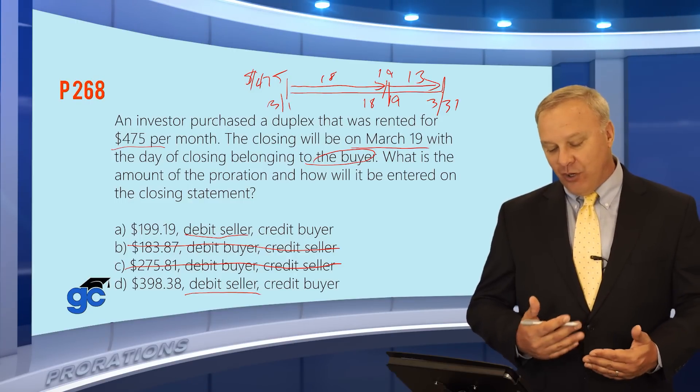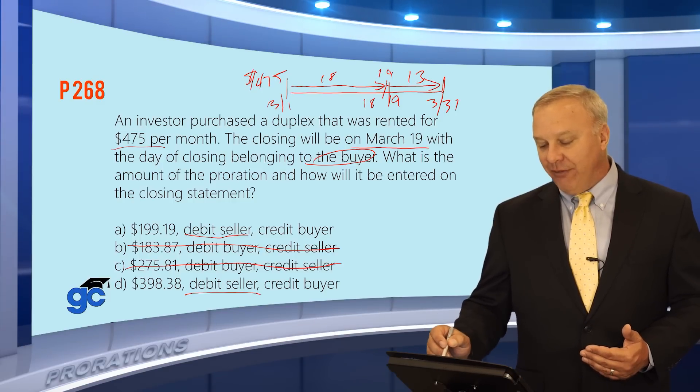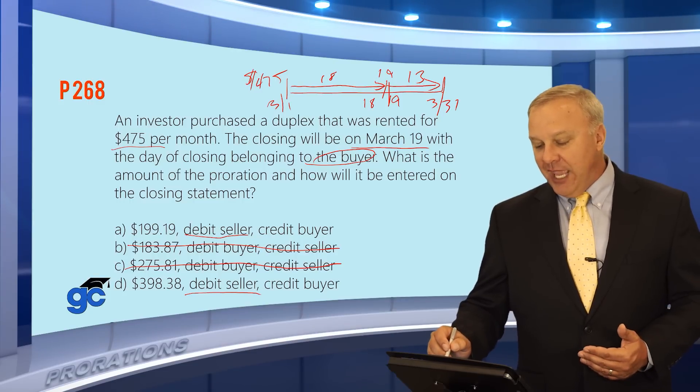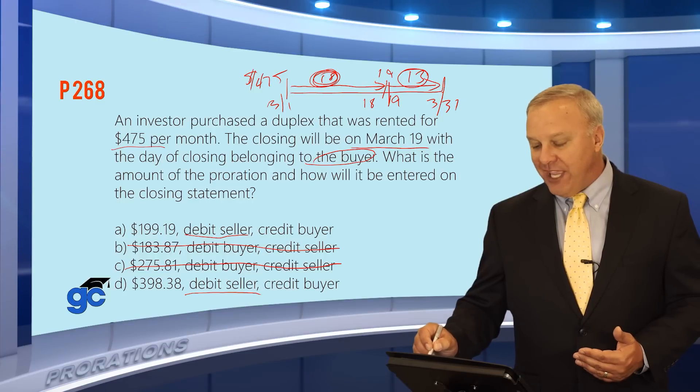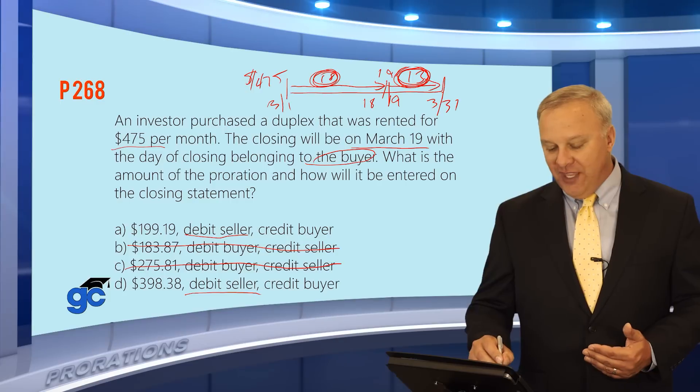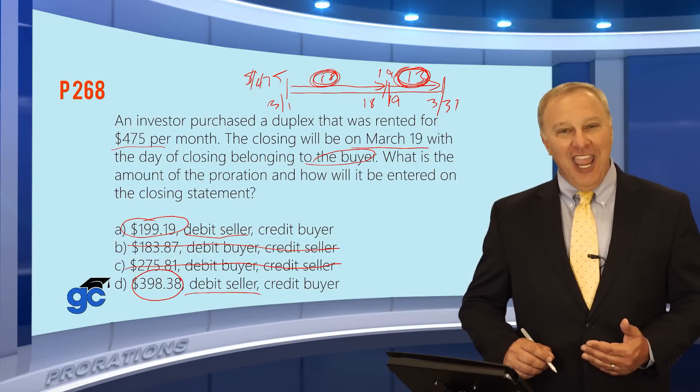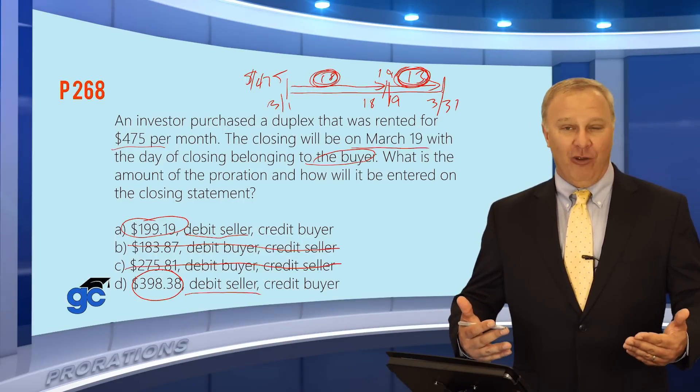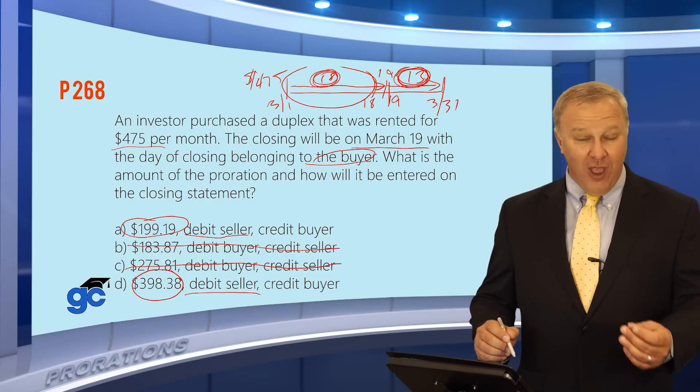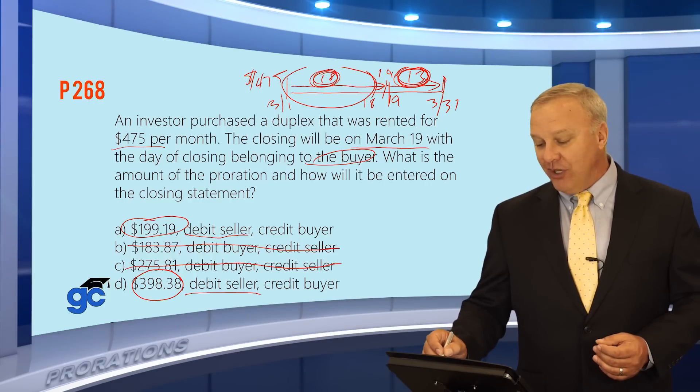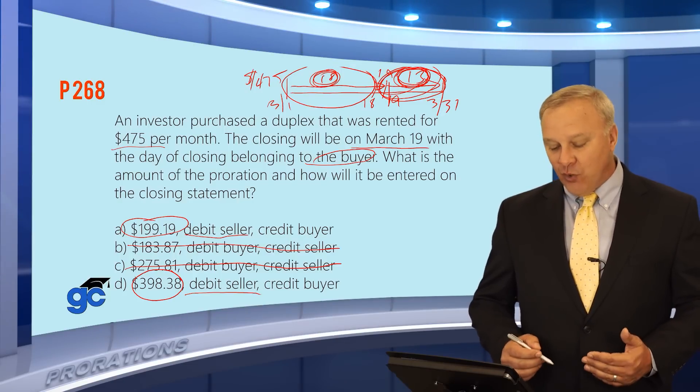When we know we're going to debit the seller, we're going to credit the buyer. Let's again look just visually at this timeline. There are 31 days in the month, the seller collected for the full month, and is entitled to 18 days, which they've already got, but they've got to give the buyer the money for the 13 days. So if you look at these two numbers, you've got approximately $200 and approximately $400 here. And the question is, which is the larger amount? Well, the larger amount is over here. That's what the seller collected and was entitled to. The smaller amount is what they collected, but they're not entitled to, and they have to give to the buyer.